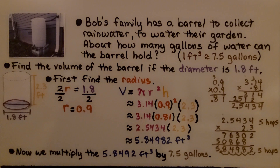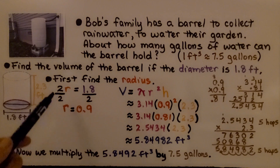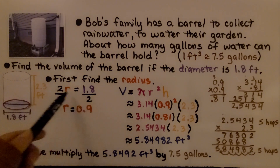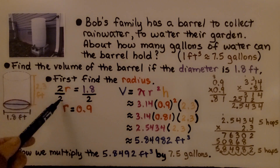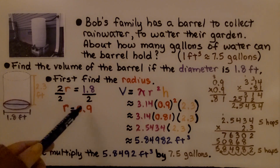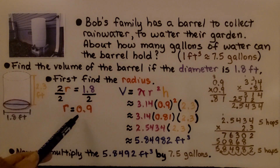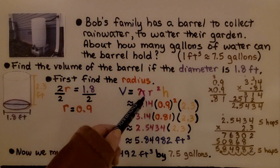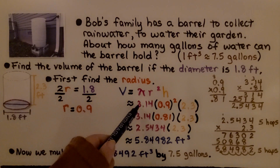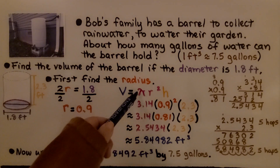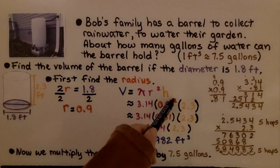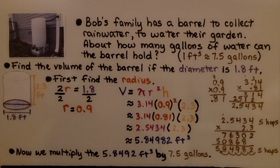First, we find the radius since we were given the diameter. We know two times the radius equals 1.8, so we divide both sides by 2 to get the radius equals 0.9. Now we put the information into the formula: V equals pi r squared h. We'll use 3.14 for pi, multiplied by 0.9 squared, times the height 2.3.